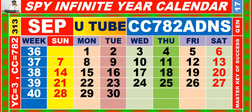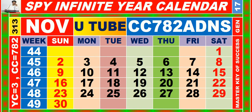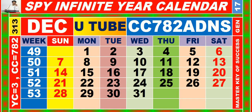Calendar for the month of September, having calendar code equal to 7, 8, 2. Calendar for the month of October, having calendar code equal to 7, 8, 2. Calendar for the month of November, having calendar code equal to 7, 8, 2. Calendar for the month of December, having calendar code equal to 7, 8, 2.